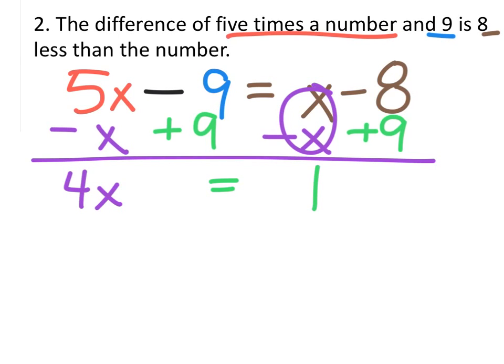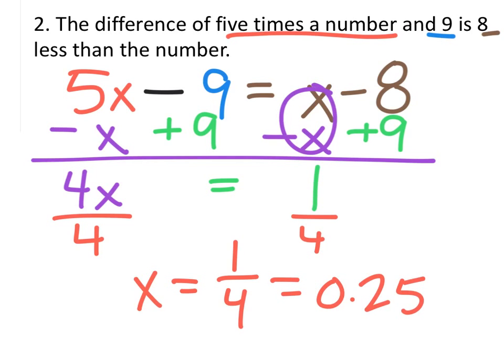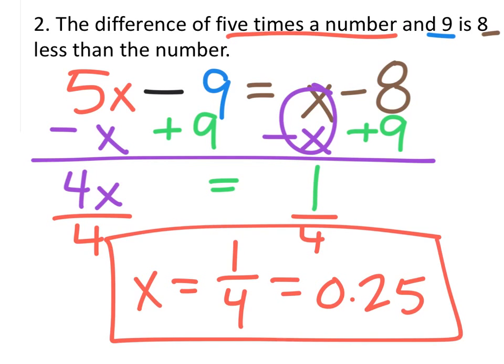After subtracting x from both sides and adding 9 to both sides, the final thing I'll do is just divide both sides by 4. And I have x equals 1 fourth. Some of you prefer the decimal, which is fine. It's just a 0.25. There you go.